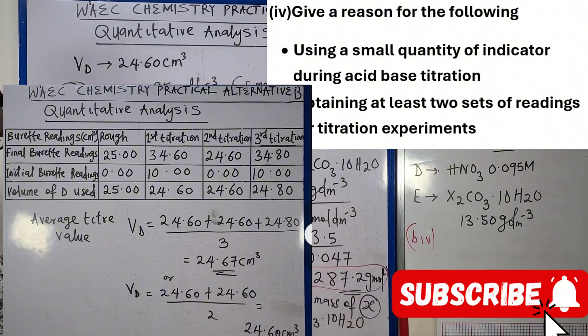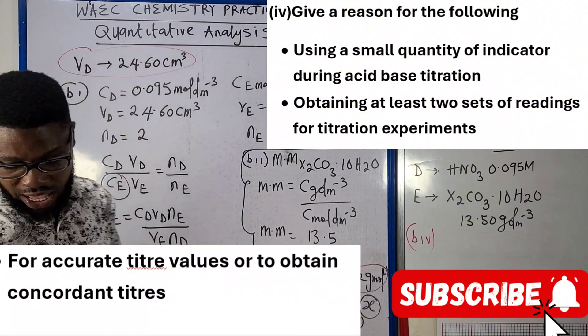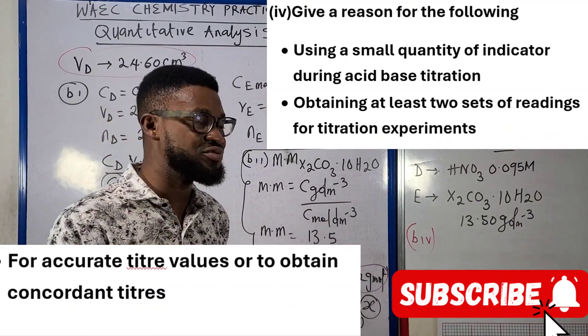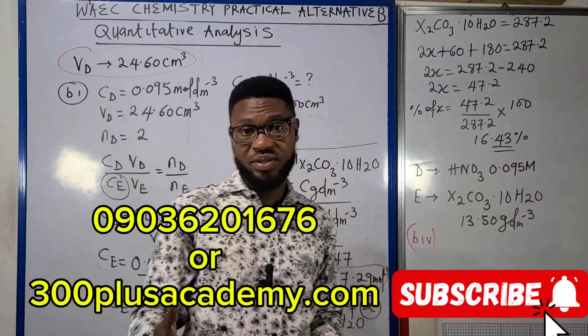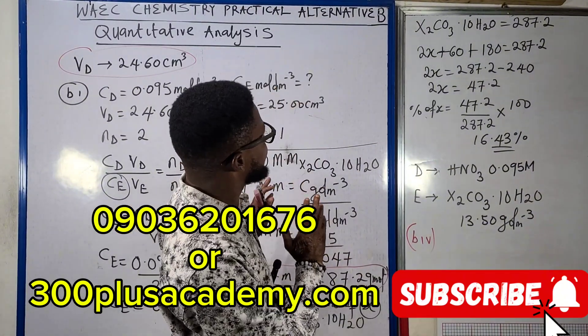You can see we have the rough titration, we have the first, we have the second, we have the third. Why are we repeating this titration during this experiment? The reason is very simple: it is for us to get accurate titre values or to obtain concordant titres.